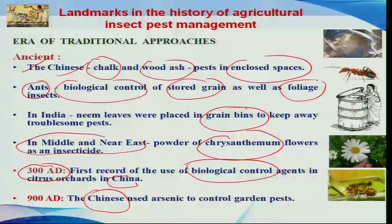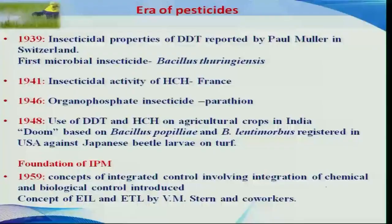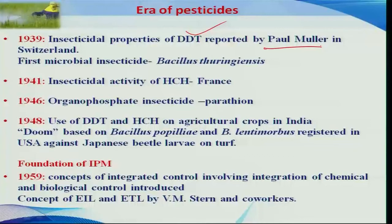The Chinese were also the first to use inorganic insecticides for management of garden pests. Many workers then moved from biological control to pesticidal control. Before the invention of DDT, pesticide management was negligible — only a few insecticides belonging to inorganic groups were used.